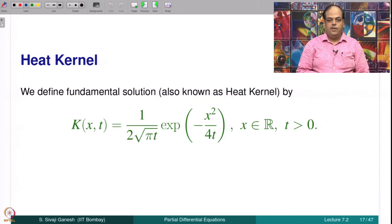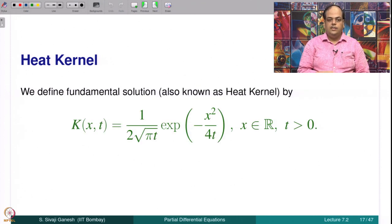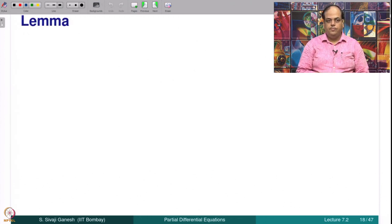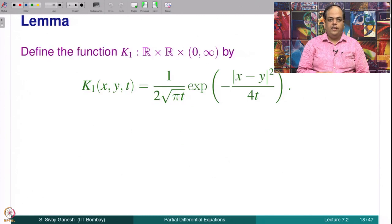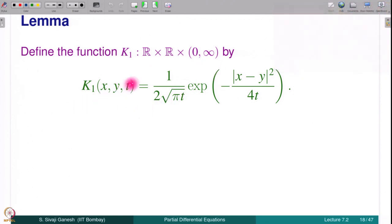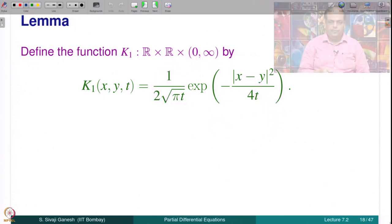We define what is called the heat kernel or fundamental solution by the formula K(x,t) = 1/(2√(πt)) · exp(−x²/4t). This is in fact u_x(x,t) that we obtained. We define the function K₁ from ℝ × ℝ × (0,∞) to ℝ by K₁(x,y,t) = 1/(2√(πt)) · exp(−(x−y)²/4t), which is nothing but K(x−y, t).